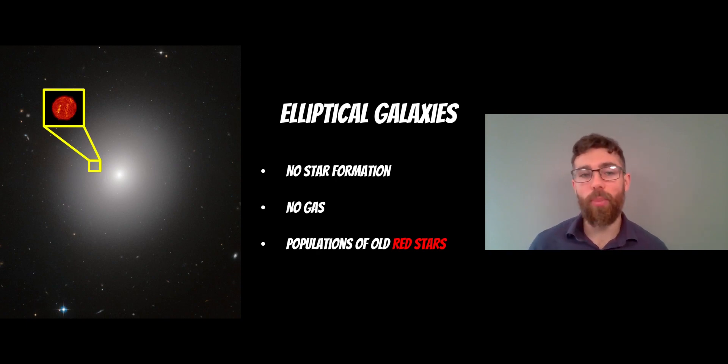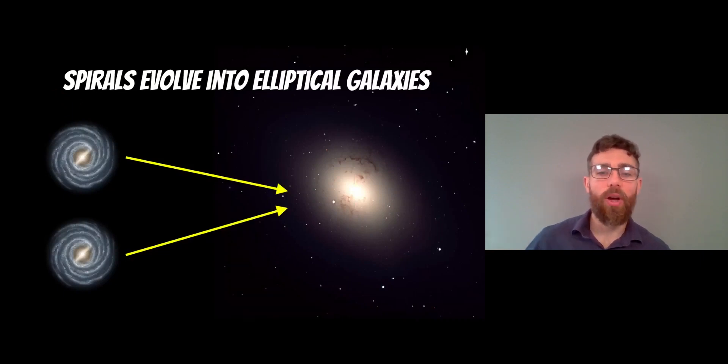But where do starburst galaxies fit in with these two main types? Well, we kind of know that spirals evolve into elliptical galaxies through merging. So you'll have spiral galaxies collide. And over time, that depletes all the gas, loses their spiral arms, they end up as elliptical galaxies and a bit more spherical. So merging spiral galaxies will evolve into elliptical galaxies.